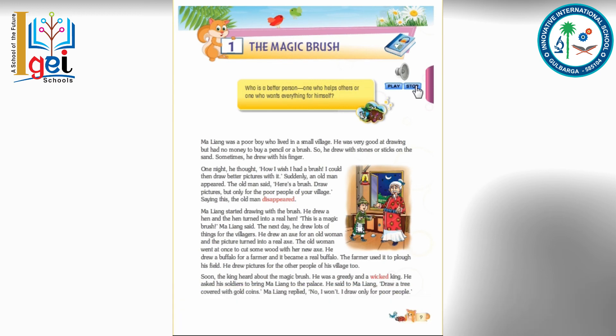He drew pictures for the other people of the village too. Soon the king heard about the magic brush. The king was very greedy and wicked, so he asked his soldiers to bring Ma Liang to the palace. He said, 'Ma Liang, draw a tree covered with gold coins.' Ma Liang replied, 'No, I won't. I only draw for the poor people.'